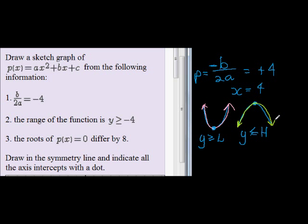We have y greater than or equal to -4. In other words, we have this valley shape, which means that our lowest point is -4.